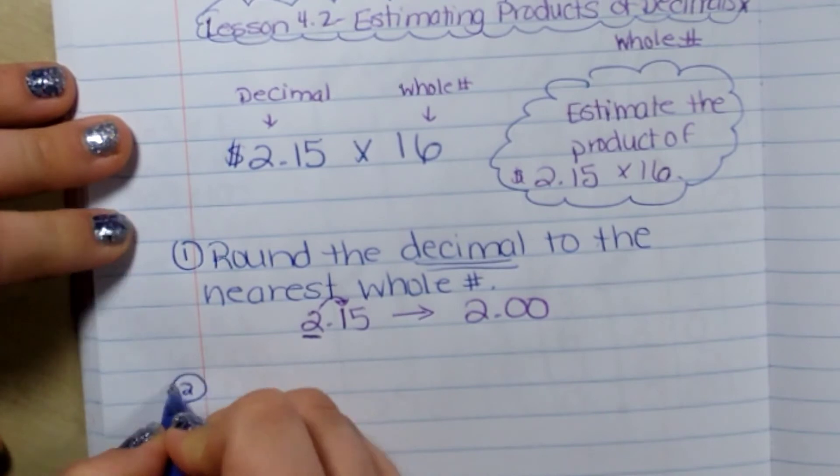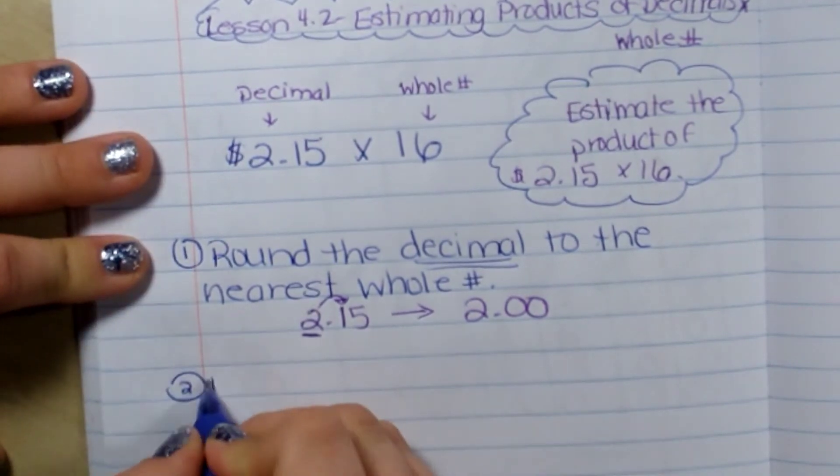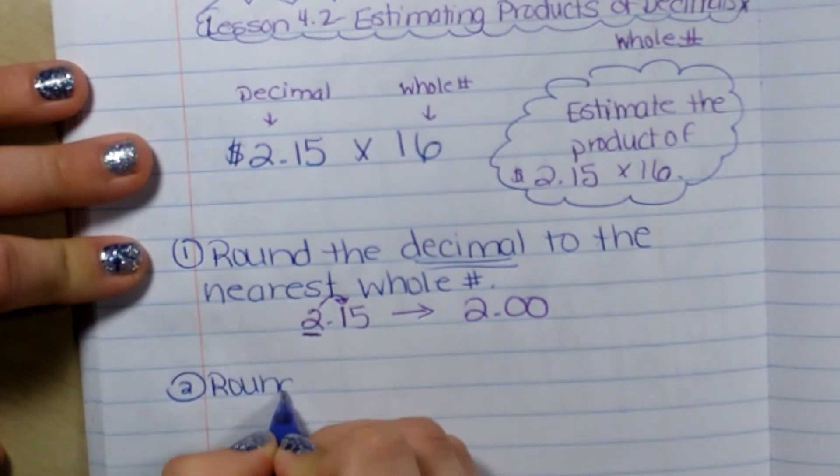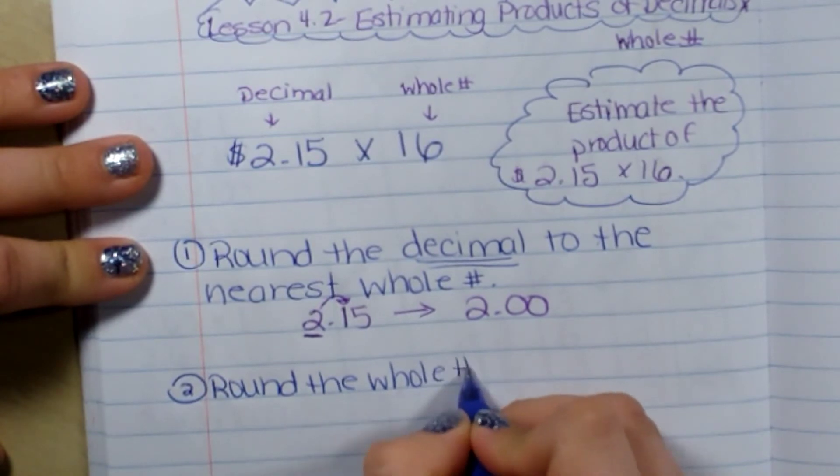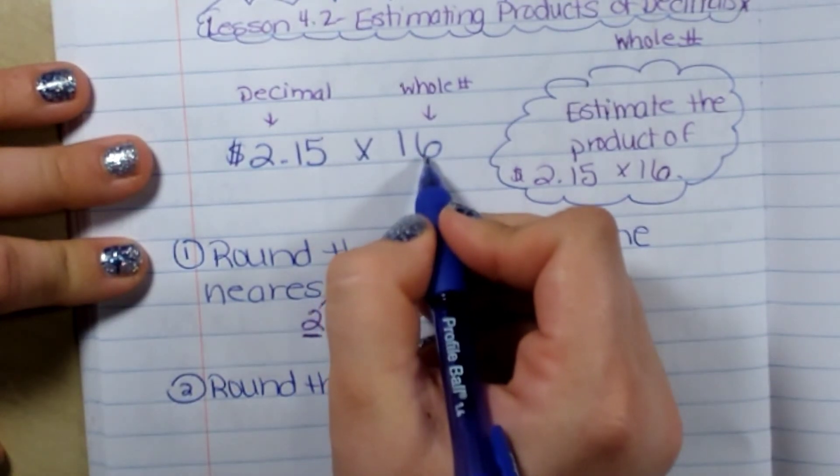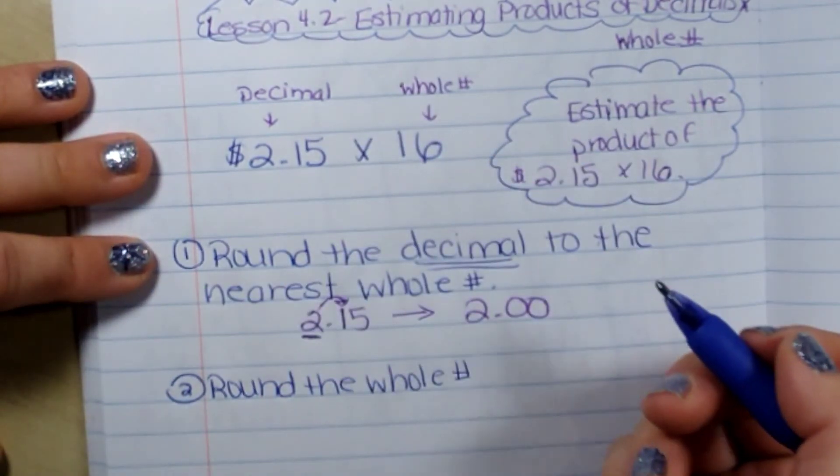The next step would be to round my whole number to either the tens place or the hundreds place, the largest place value. So this goes out to the tens place, so I'm going to round it to the nearest tens place.